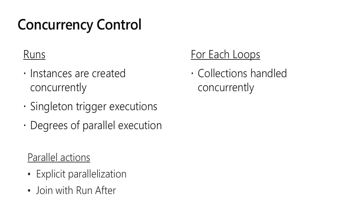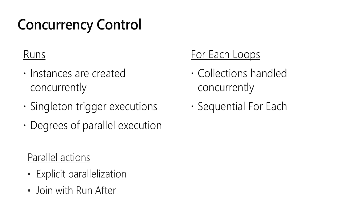For-each loops are natively concurrent. We take a collection passed to the for-each loop and run 20 instances at the same time by default. Keep that in mind when deciding how to process items. If you need sequential processing or want to avoid overwhelming a downstream system, you can control the degrees of parallelism — either reducing it or extending it for faster throughput.